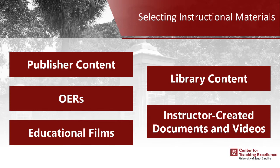Even though publisher content can be positive, textbooks are expensive and can be difficult to update. One option to consider is open educational resources, or OER — educational materials offered freely online for anyone to use. Most OER licenses allow the resources to be shared, remixed, or customized for your class. These include textbooks, course materials, videos, and even software to support access to knowledge. The best access resource for OER is the Thomas Cooper Library, which has a whole page for OERs.